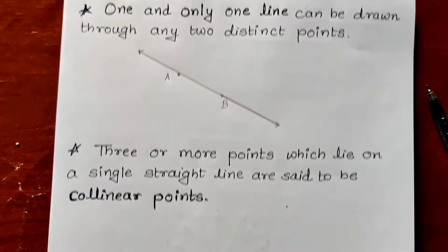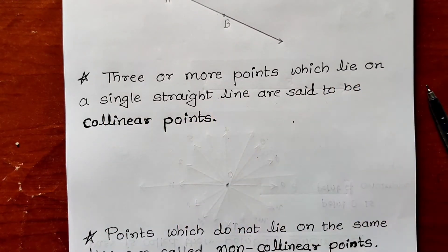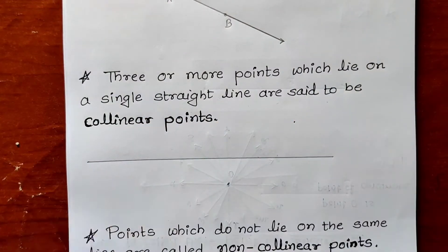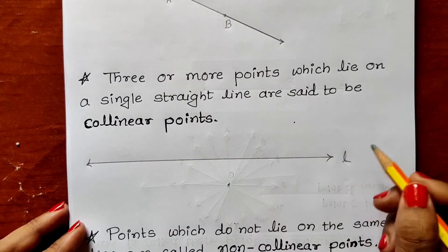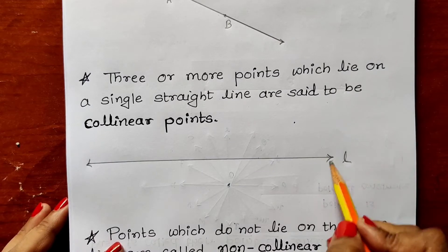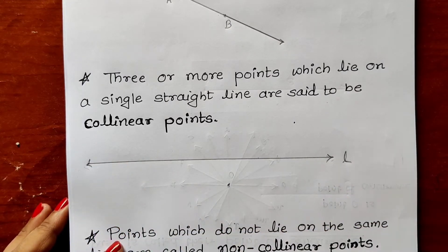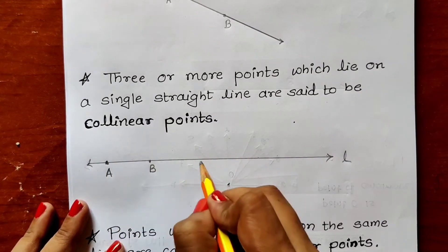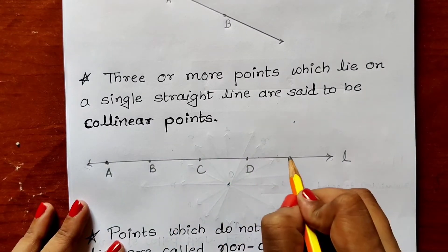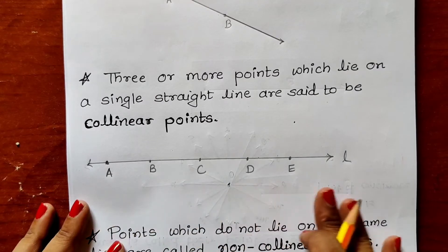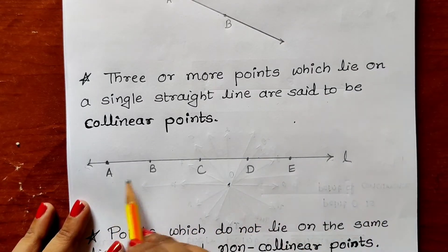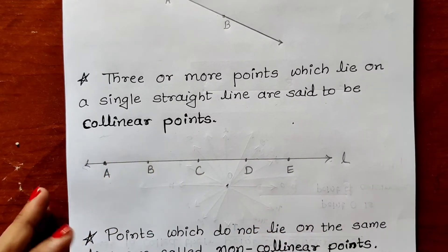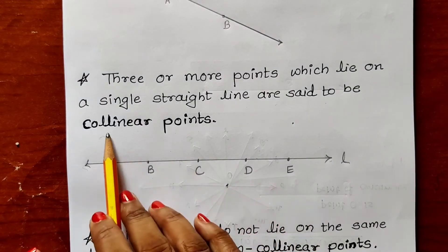Three or more points which lie on a single straight line are said to be collinear points. If I draw a line L and plot points A, B, C, D, E on it, all these points are on the same line and that is why points A, B, C, D, E are known as collinear points. When points are in the same line, they are known as collinear.